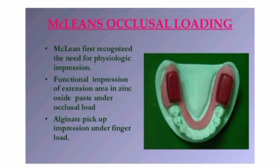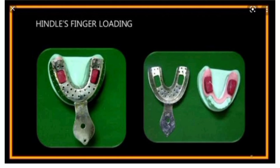To overcome these disadvantages, Hindils made some modifications. It is the same as McLean's technique, but while making the custom tray material he made stoppers — this does not permit much force to compress the tissue. Another modification is that while selecting the stock tray material, he selected one with holes. By selecting this, we can directly place the finger and apply pressure so it easily reaches the tissues and records the impression material under the masticatory forces.